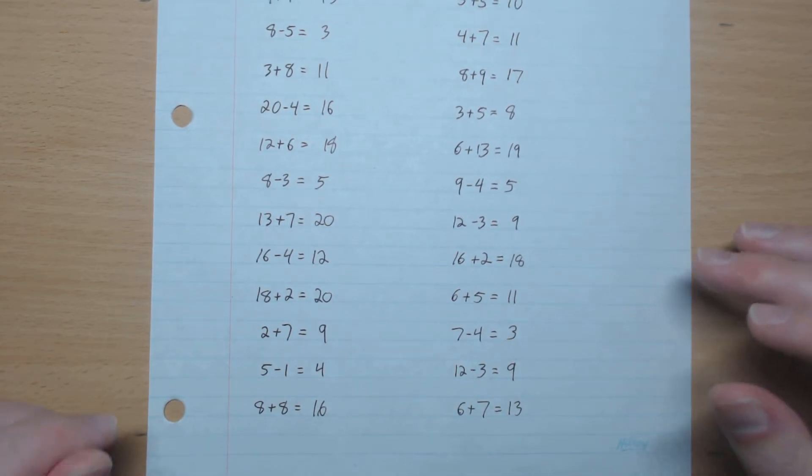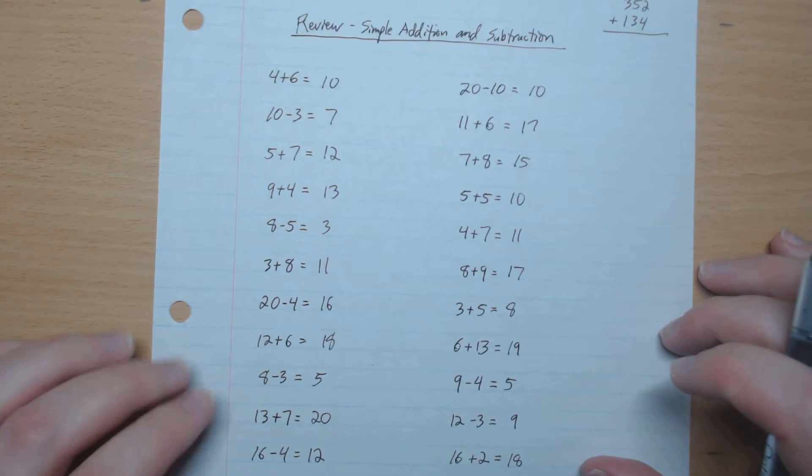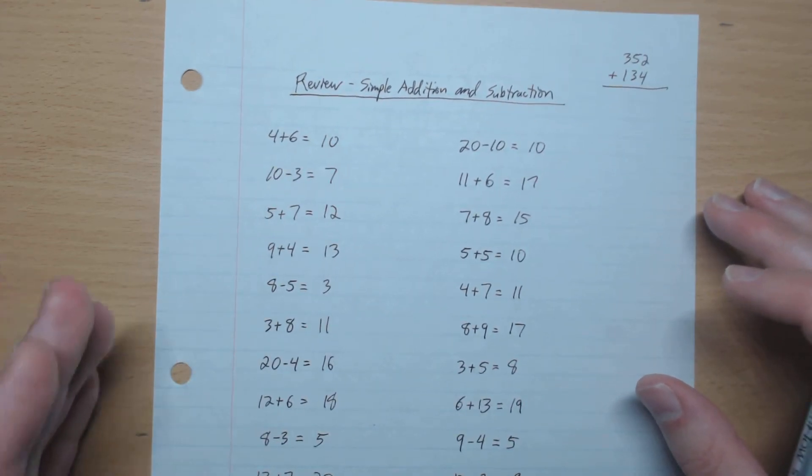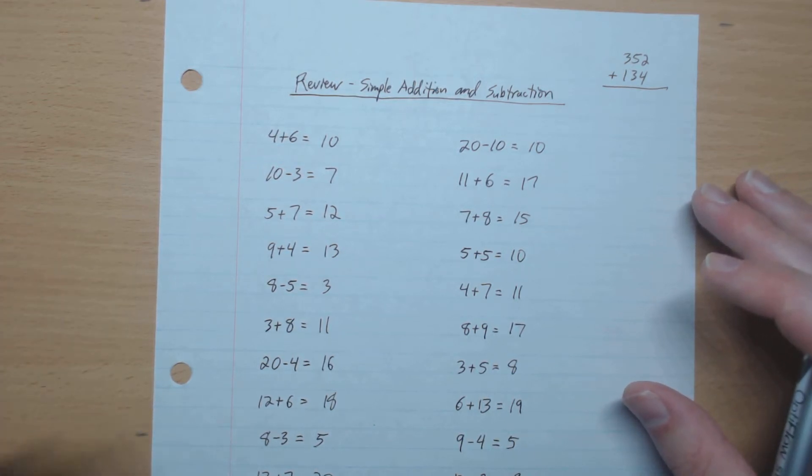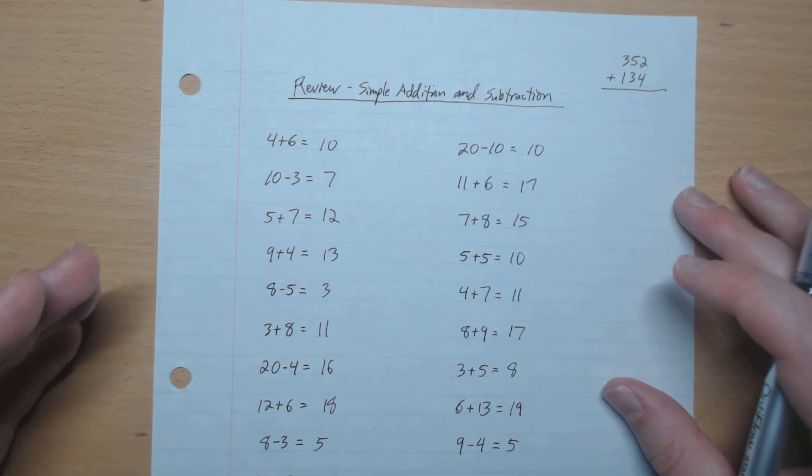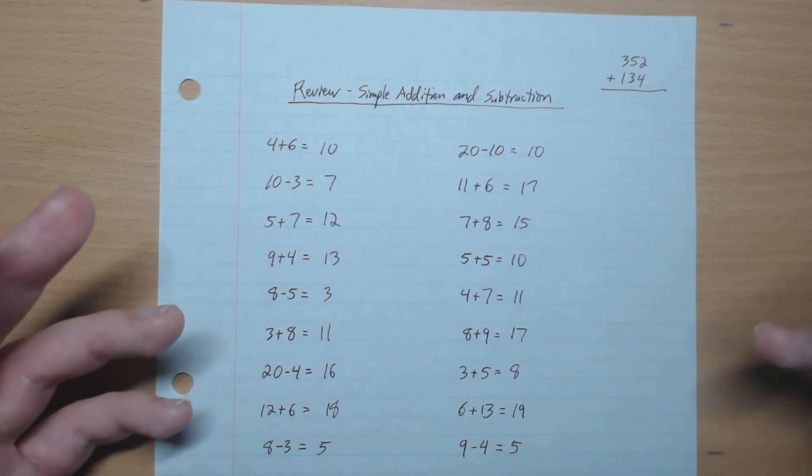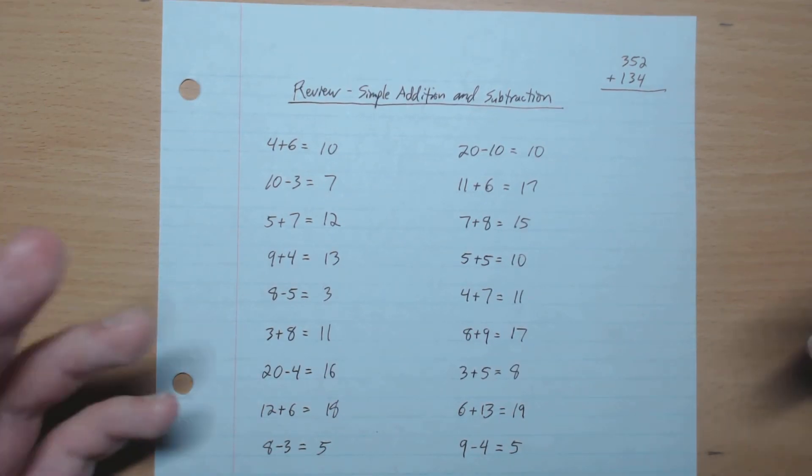So a couple notes. First one is if you were counting using your fingers that's totally fine. The first milestone is to get it right and once you've got it right the next milestone is to be able to do it quickly. So one thing that I recommend is let's say you got stuck here, 4 plus 6 equals 10. You got it the first time you're doing mental math or you counted, whichever way is fine.